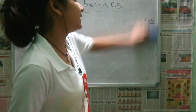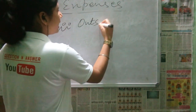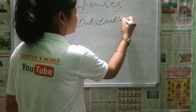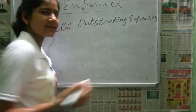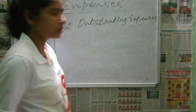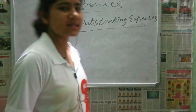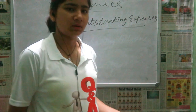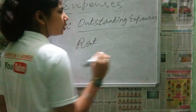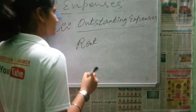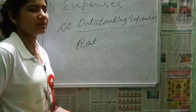The second type is outstanding expenses. Outstanding expenses means expenses that are due but have not been paid yet. For example, salary for two months that has not been paid. If payment has not been made, it is an outstanding expense. If advance payment has been given, that is prepaid expenses.